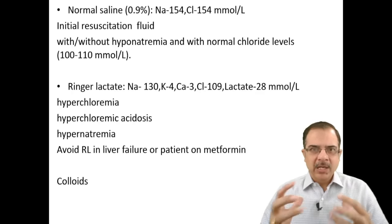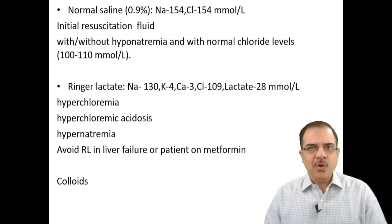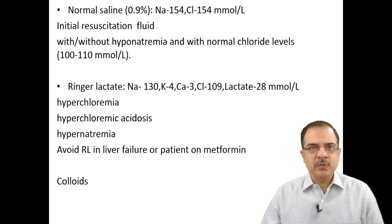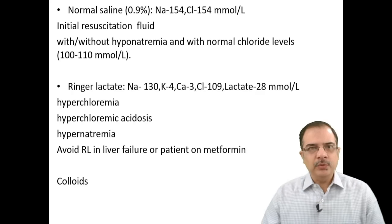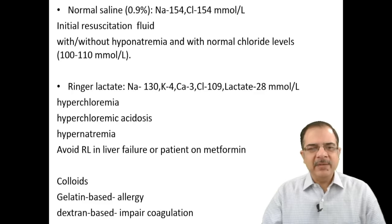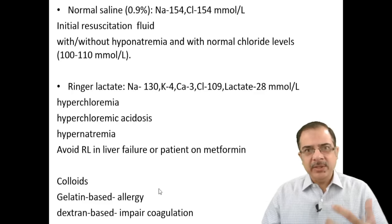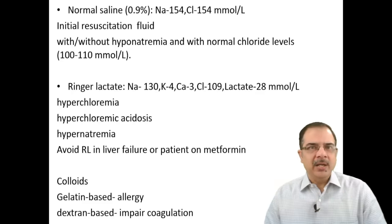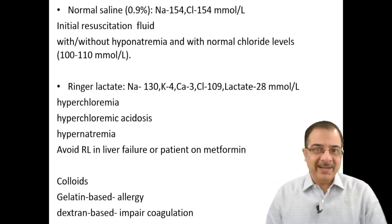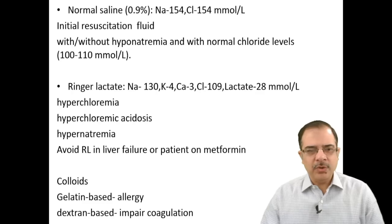Colloids increase the oncotic pressure of blood vessels, retaining fluid in the intravascular space or bringing fluid from the third space back into blood vessels. There are three types: gelatin-based (can cause allergies), dextran-based (impairs coagulation by inhibiting von Willebrand factor and factor VIII complex), and starch-based.